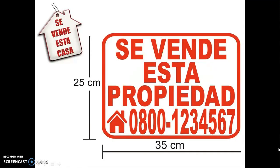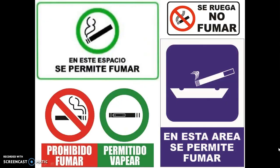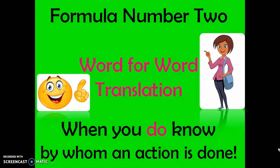Other examples you may see quite often: Se vende esta casa, or Se vende esta propiedad. Another simple passive voice example: En este espacio se permite fumar, or Se ruega no fumar, En esta área se permite fumar. Those are all examples of the simple passive voice.